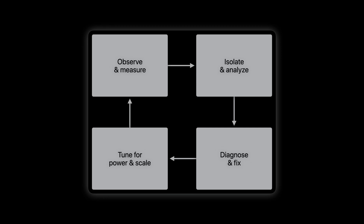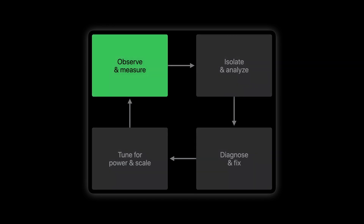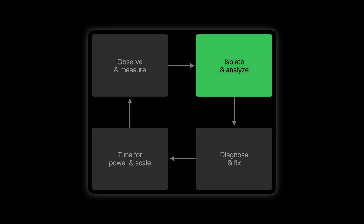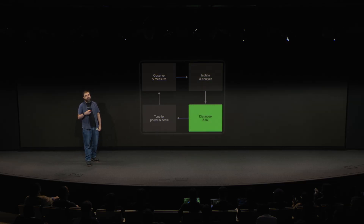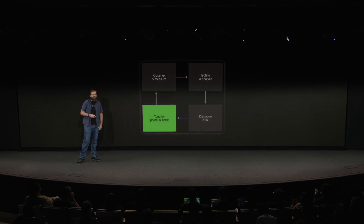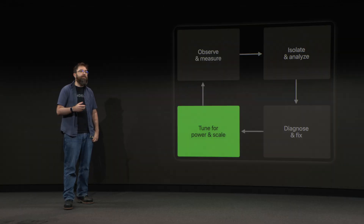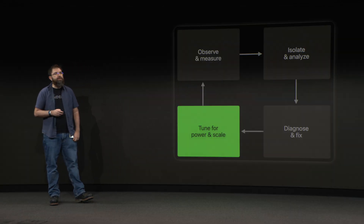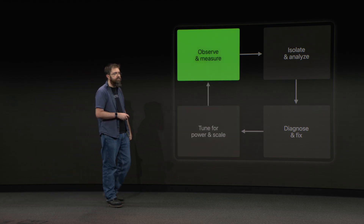This is the classic approach you can use for performance optimization — it's a systematic loop. First, we observe and measure performance over a long gameplay session to find inconsistencies. Next, we isolate and analyze a problematic area to understand what's happening at the frame-by-frame level. Then, we diagnose and fix the root cause using our GPU debugging tools. And finally, with our game running smoothly, we tune for power and scale. We may need to do a few laps of this cycle to get to a good place. So let's begin.